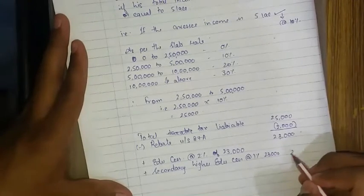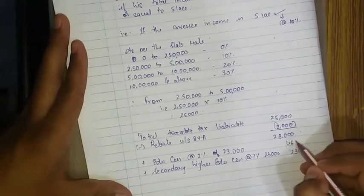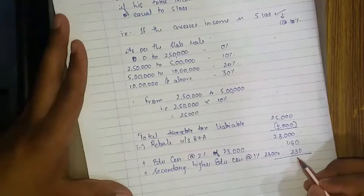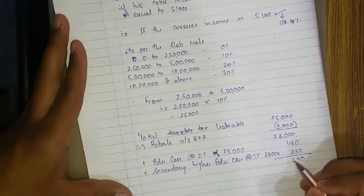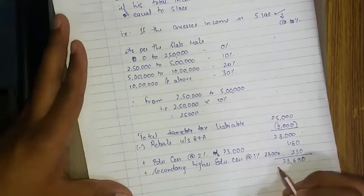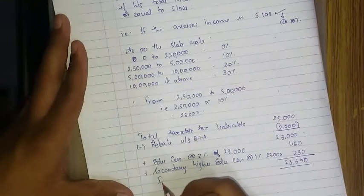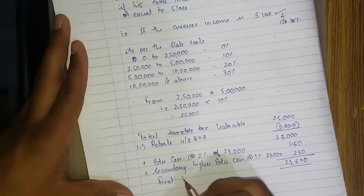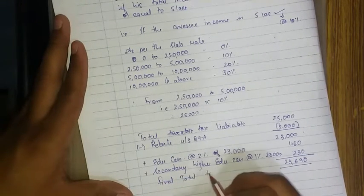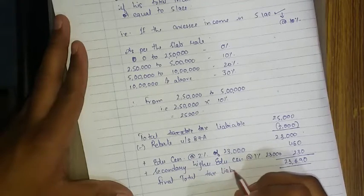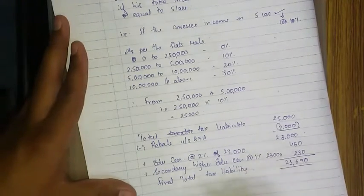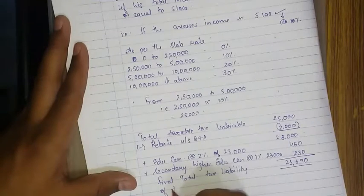Comes to 230, 460, total 23,690 - final total tax liability of the SAC.